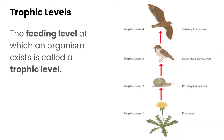Producers are at trophic level one, primary consumers at level two, secondary consumers at level three, and tertiary consumers at trophic level four. It's just another way to classify what level these organisms are at.